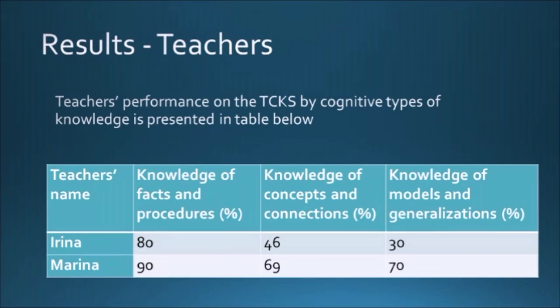Here in this chart we can see the performance of teachers on the teacher content knowledge survey by cognitive type. For knowledge of facts and procedures, both teachers performed well at 80% and 90%. For knowledge of concepts and connections, Irina got 46% and Marina 69%. The biggest difference is in knowledge of models and generalizations: Irina got 30% and Marina got 70%.